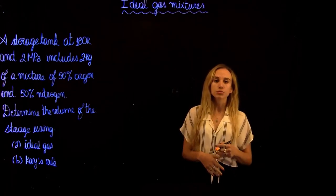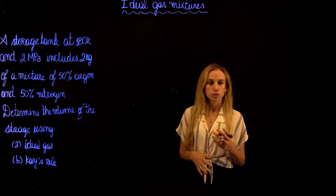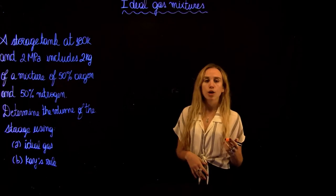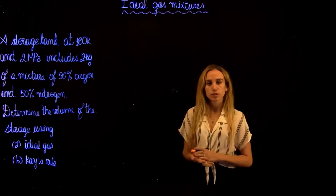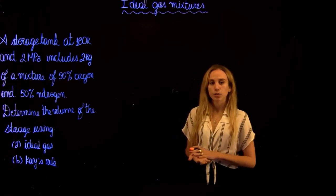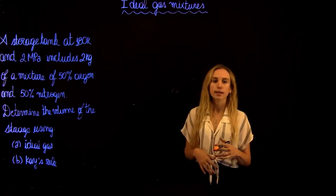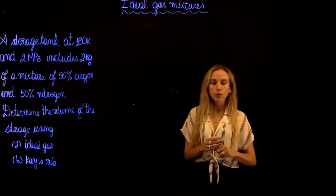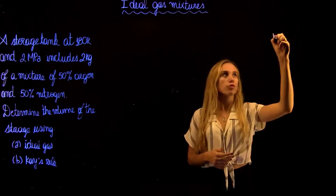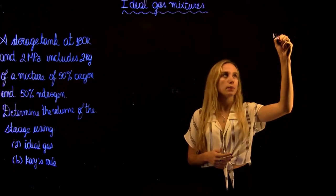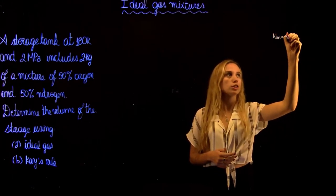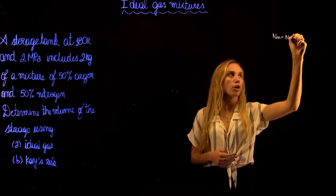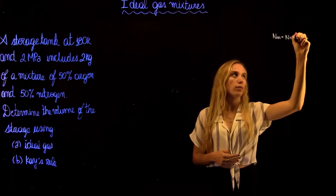We're asked to find the volume of the storage tank by first using the ideal gas equation and then Kay's rules. What we need to know is that the total moles of the mixture is going to be equal to the sum of the moles of each compound.